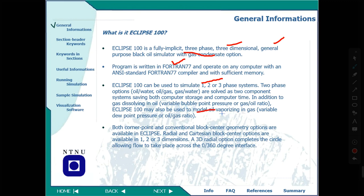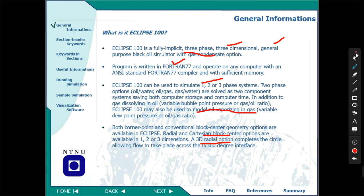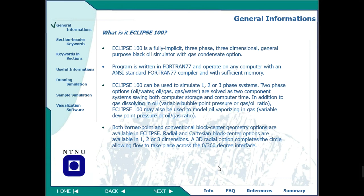It can also model vaporizing in gas and oil. It also has a 3D radial option and Cartesian block-centered grids. Overall it has all options and is quite a modern software used nowadays in the oil and gas industry.